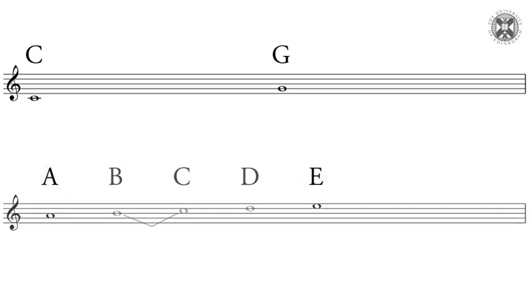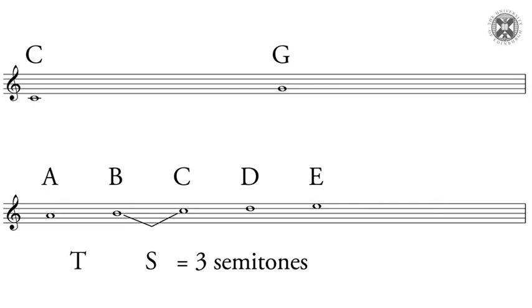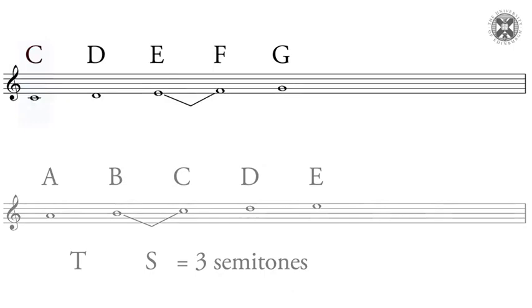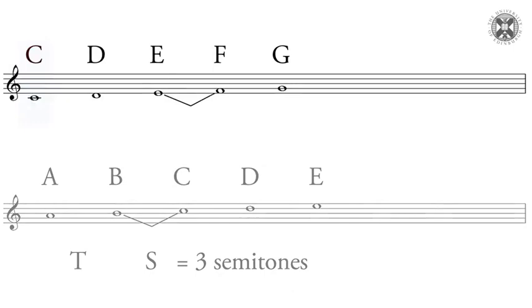Going back to A, let's now have a look at A to C — this is note one to three, the interval of a third. Here we get a tone and a semitone, which adds up to three semitones. However, if I start on C and go from C to its third note, which is E, I get two tones, which adds up to four semitones. And there is the difference.